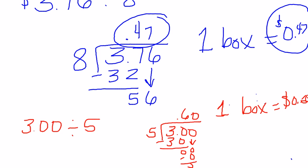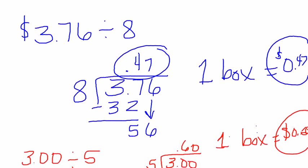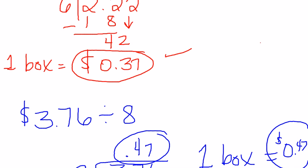So now the question was, which offers the least expensive unit price? Which is the least expensive for one box? And the answer would be the first option because one box is only 37 cents.